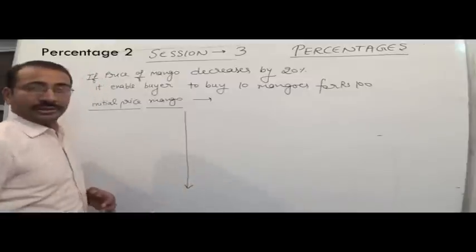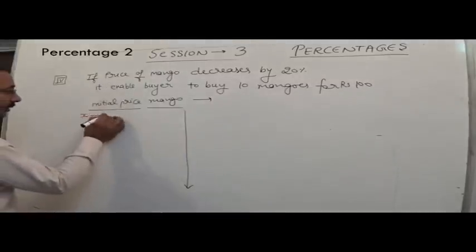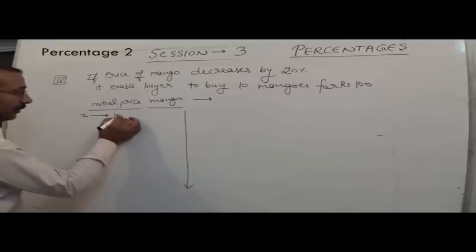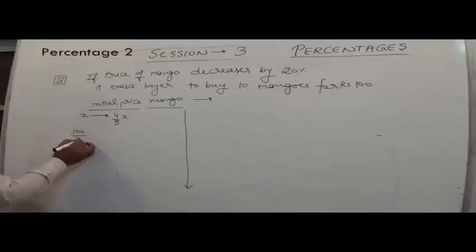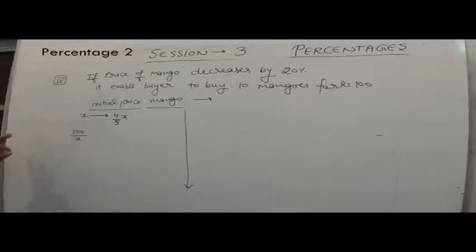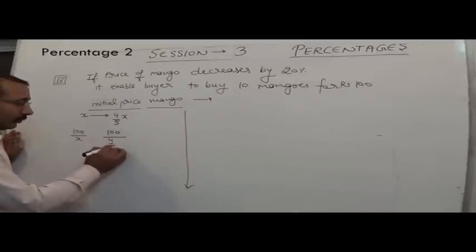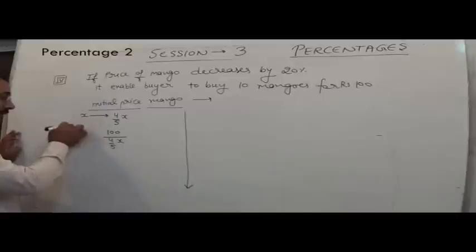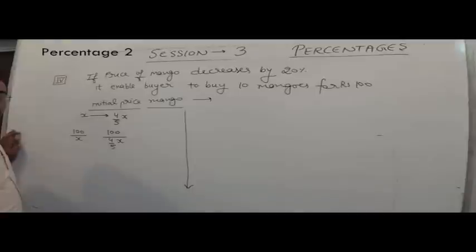We have two approaches to answer this question. Suppose the initial price was x. It decreased by 20%, so it becomes (4/5)x — that is the decreased price. In the first case, total expenditure is ₹100, and price per mango is x, so dividing 100 by x gives the total number of mangoes. In the second case, we spend ₹100 at the decreased price 4/5 x — that is the number of mangoes when price was 4/5 x.